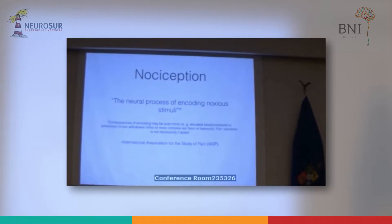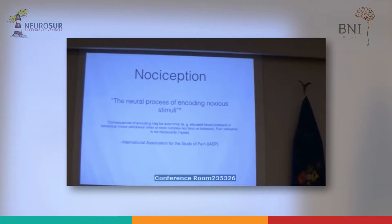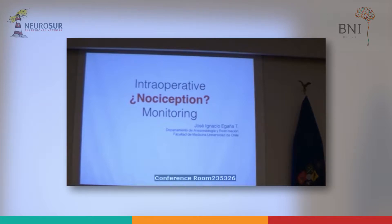What is nociception? Pretty easy — copy paste. The neural process of encoding a noxious stimulus. This definition also has a note which might be important for this talk: the consequence of encoding may be autonomic or behavioral. Behavior during general anesthesia is kind of hard to measure, but autonomic responses are more simple to measure. We're going to see that some monitors use this part of the definition. So maybe this talk is not about pain — it may be about intraoperative nociception monitoring. We may discuss this at the end.